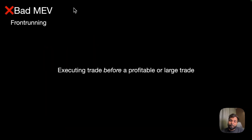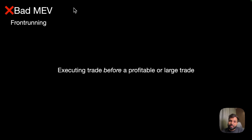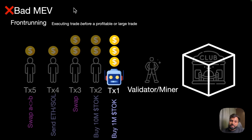Now comes the bad practices of MEV. Front-running is the most common one, which we already saw, where a trade is executed right before a profitable or large trade. For example, there can be a bot which keeps looking for large transactions and sends a transaction similar to that with a higher gas fee, eventually front-running that transaction, and then they can sell that for profit in future. This results in the user who sends transaction number two getting the TOK tokens at a higher price.